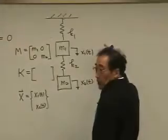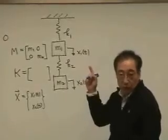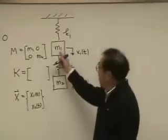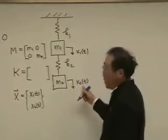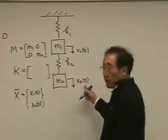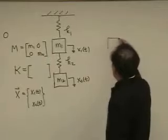What kind of reaction, what kind of force would be acting on mass MN when we have displacement X1T and X2T? Let's draw a free-body diagram.